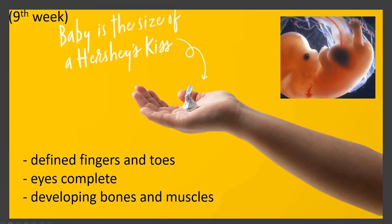Week nine — you're up to being a Hershey's Kiss. Fingers and toes are there, your eyes are completely there, and your bones and muscles are working their way into existence. You can see in this picture very definitely that you are looking like a little tiny baby. Remember, you are easily able to fit into somebody's hand at this point. The person probably knows they're pregnant, but they are not showing a baby bump at all. You are already significantly changed from how you started out just a few weeks before.